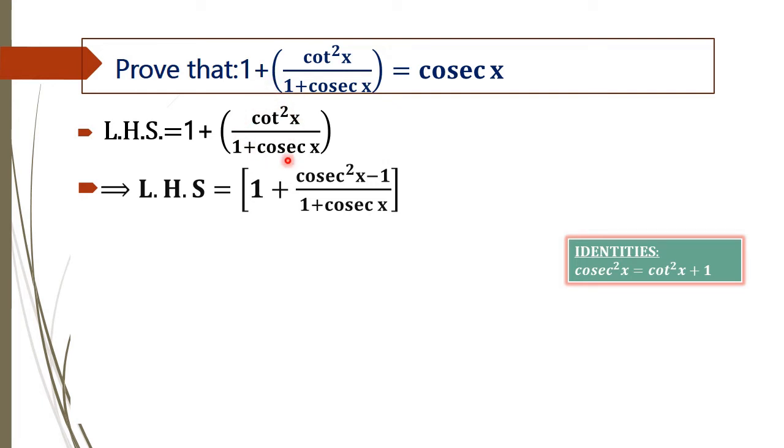That is, cot squared x can be replaced as cosec squared x minus 1. Now, this left-hand side has only the term having cosec squared x, which is of the form a squared minus b squared.